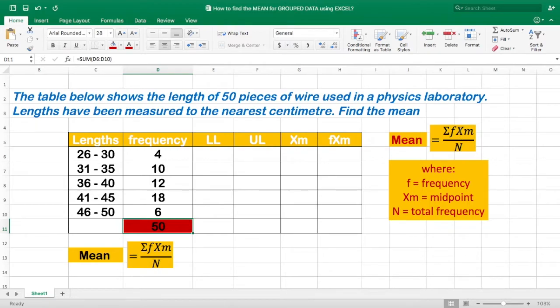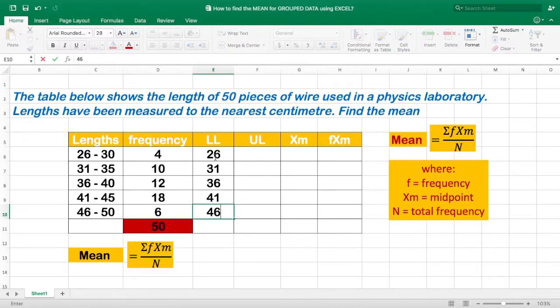And we need to find the xm, where xm is the midpoint, and we need to add the lower limit 26 and 30 divided by 2. But first, let us make a column for the lower limit, which is 26, 31, 36, 41, and 46.